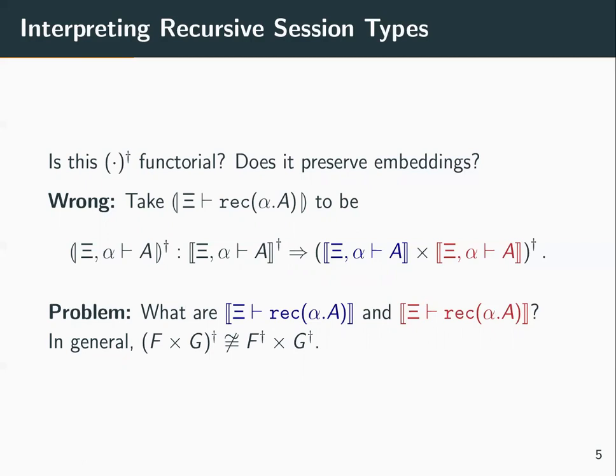What we end up with is the dagger of a product instead of a product of the daggers. So we don't know what the blue interpretation and the red interpretation of the recursive type are. The problem is that in general the dagger of a product is not isomorphic to the product of the daggers, so we need more structure.